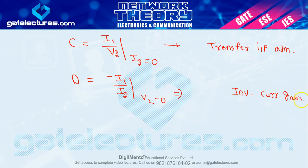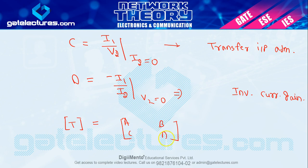So यह आपके A, B, C, D parameters की definition होती है और transmission parameter की definition होती है। Transmission matrix is equal to [A, B; C, D]. इस तरह से आप transmission matrix के एक-एक term को calculate कर सकते हैं।